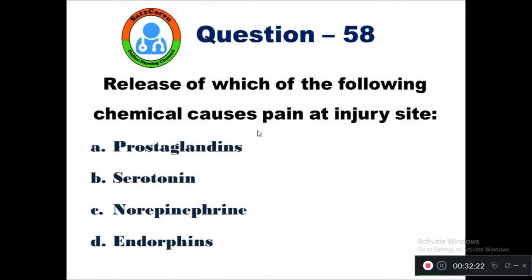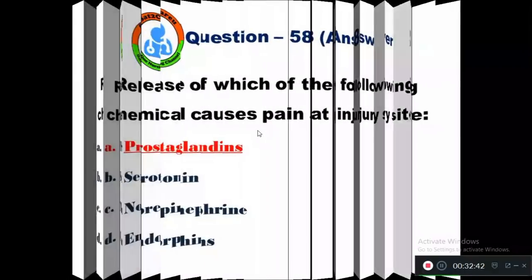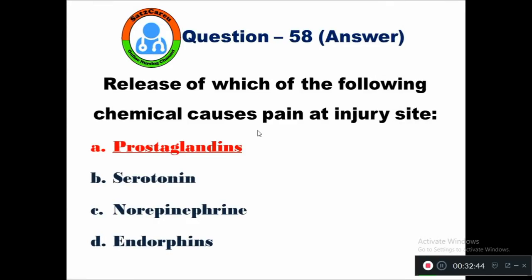Question 58: Release of which of the following chemicals causes pain at the injury site? Option A prostaglandins, B serotonin, C norepinephrine, D endorphins. Prostaglandins is the right answer — once there is any injury, prostaglandins are released in the body causing pain.